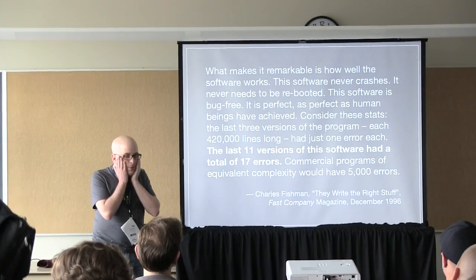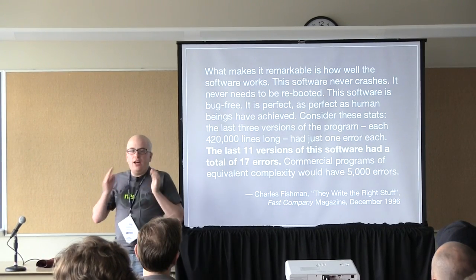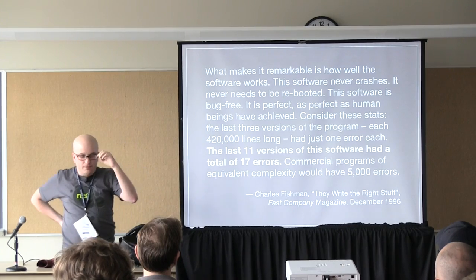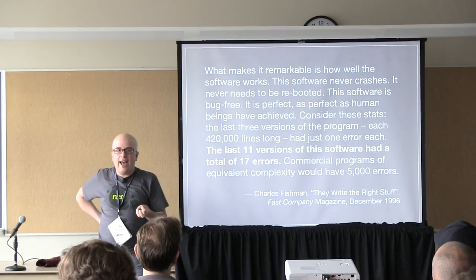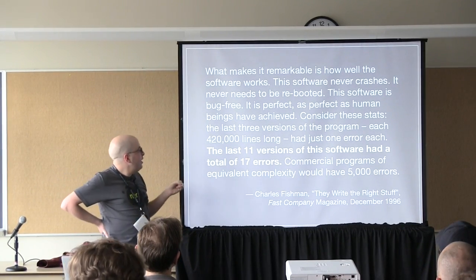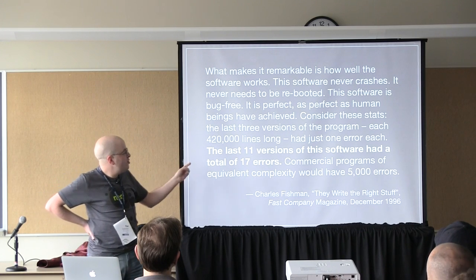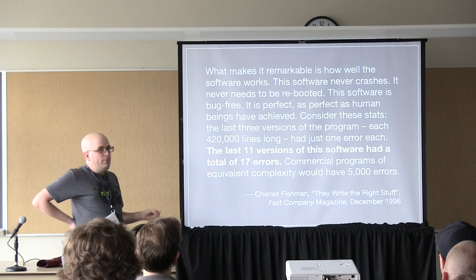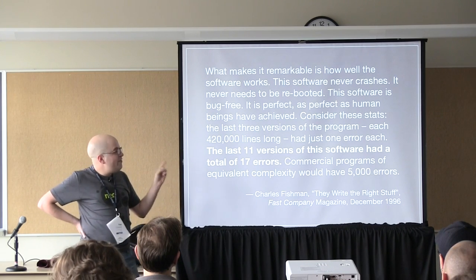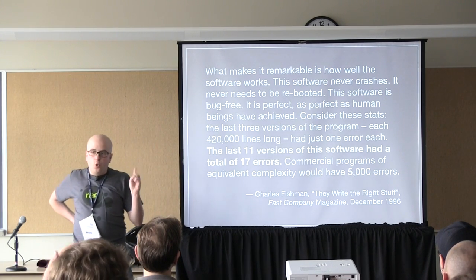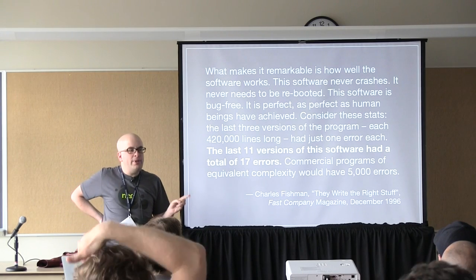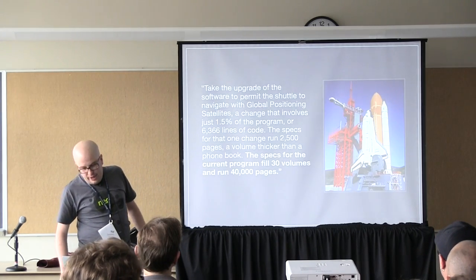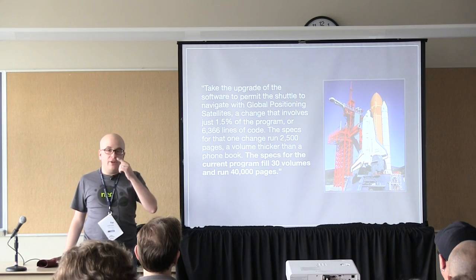This is an excerpt from a fabulous article which I highly recommend looking up from FastCut — it's still on the net — about a piece of software that has hardly any bugs in it at all. The last 11 versions of the software had a total of 17 errors, compared to other software of that size which would have 5,000 errors. It is software written by Lockheed Martin for running the Space Shuttle.